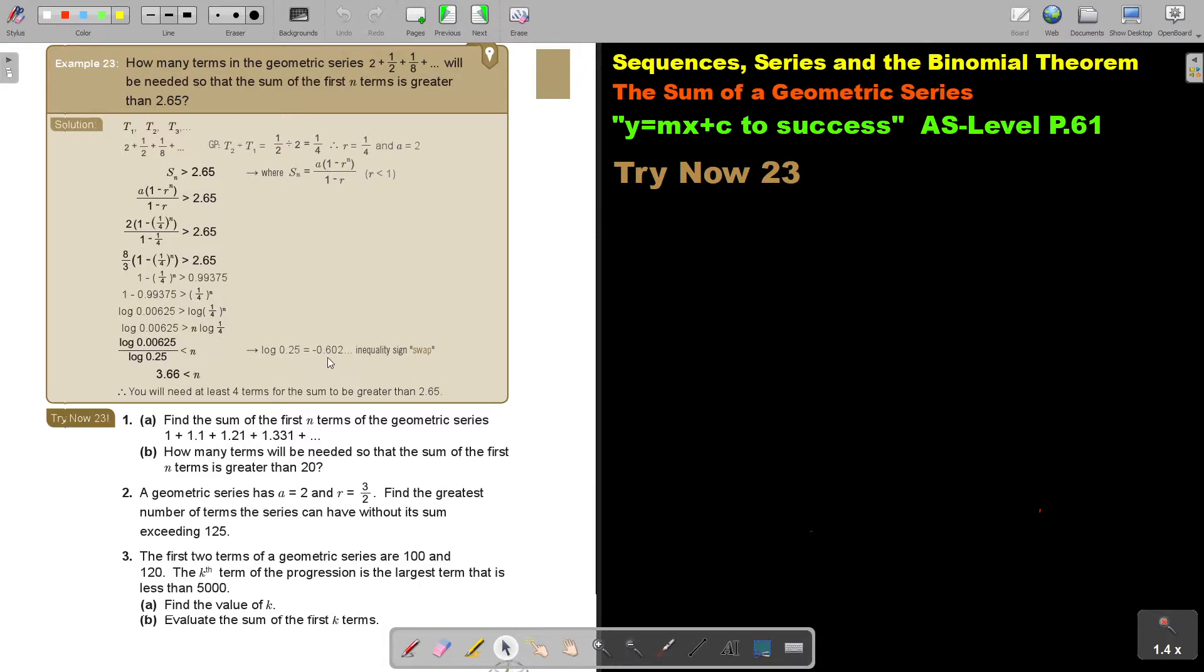And log a quarter is negative. I should have made it a quarter there. But the quarter is 0.25. So the inequality sign swaps. And N is bigger. So you will need at least 4 terms to be greater. I want you to stop the video. And I want you to do number 2.